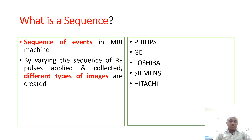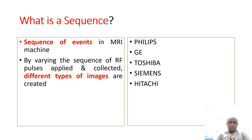Now, what is a sequence? A sequence is a series of events in the MRI machine. By varying the sequence of radio frequency pulses applied and collected, different types of images are created. This is just a sequence of events during image acquisition.